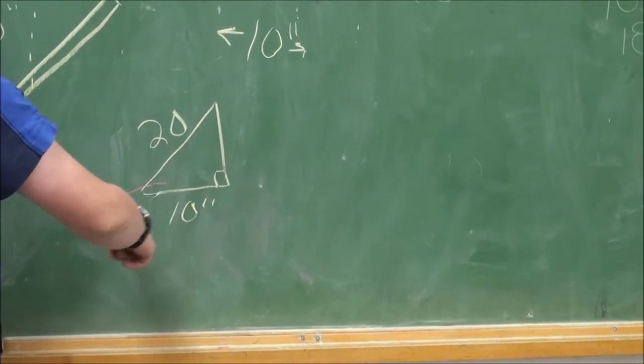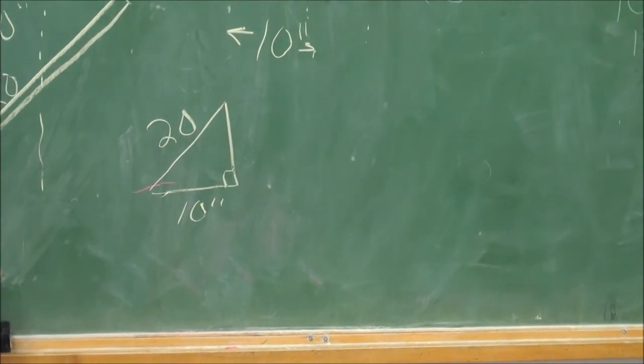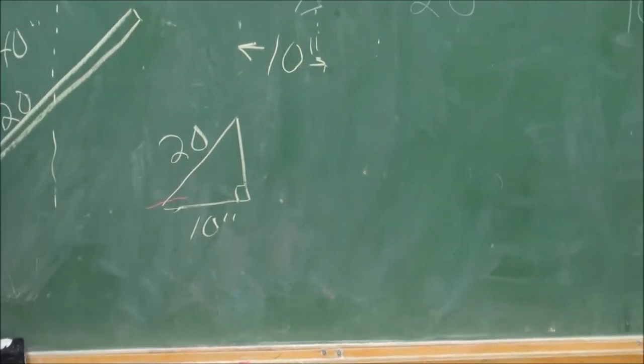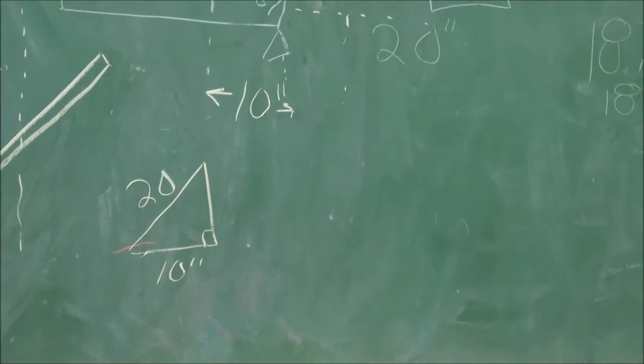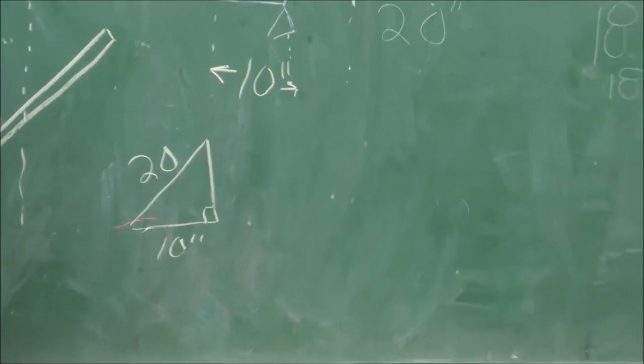We need to measure the distance from here to there. It's 10 inches. Because in the 30, 60, 90 triangle, the short side is half the long side. So the distance is 10 inches.